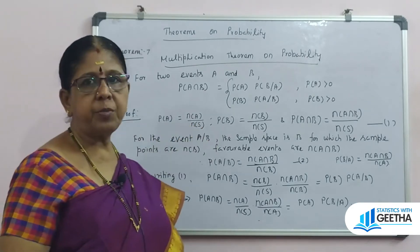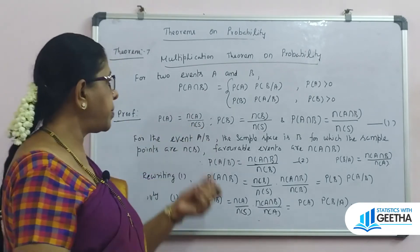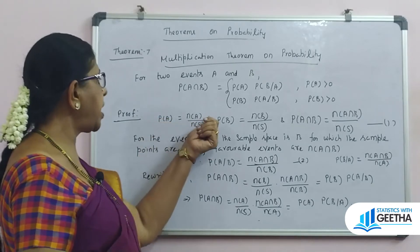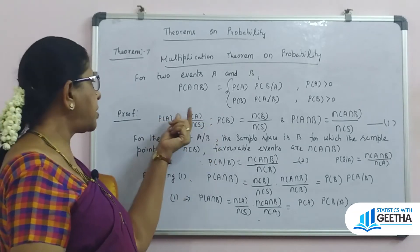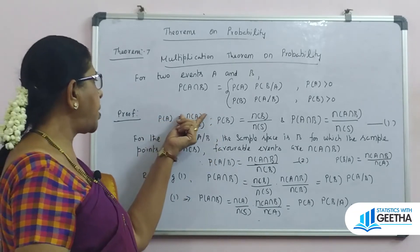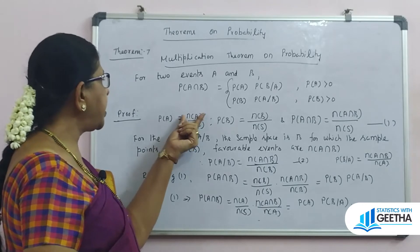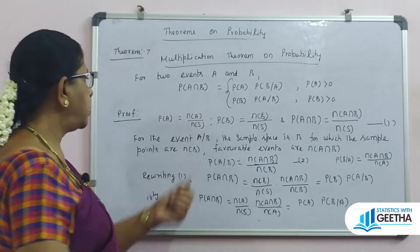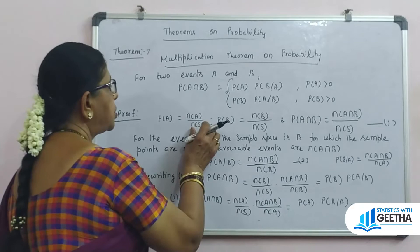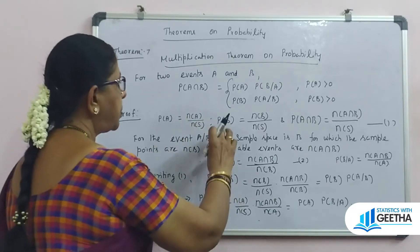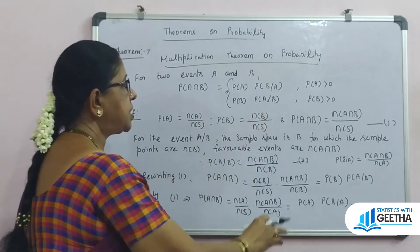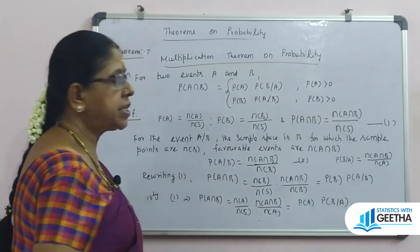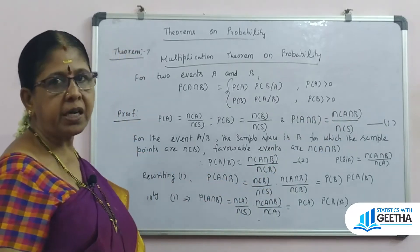By the definition of mathematical probability, P(A) equals n(A) divided by n(S) — the number of sample points favorable to event A divided by the total number of sample points. Similarly, P(B) equals n(B) divided by n(S), and P(A intersection B) equals n(A intersection B) divided by n(S).